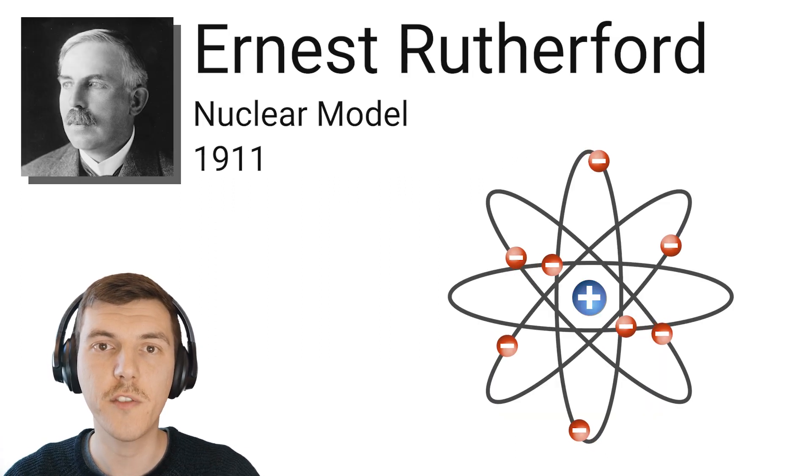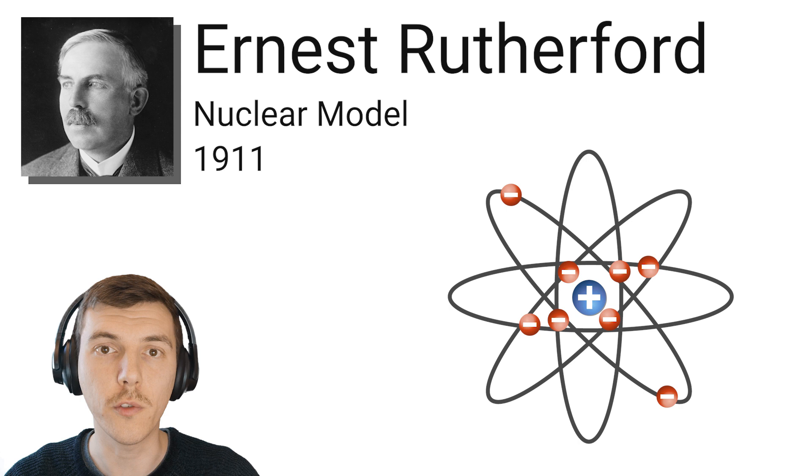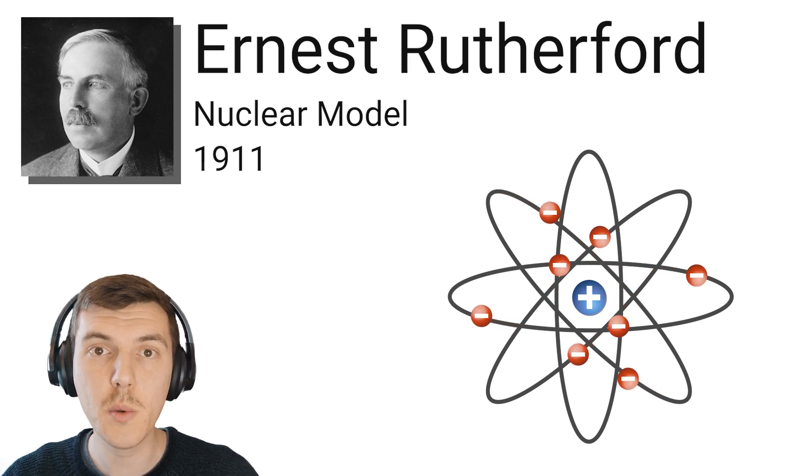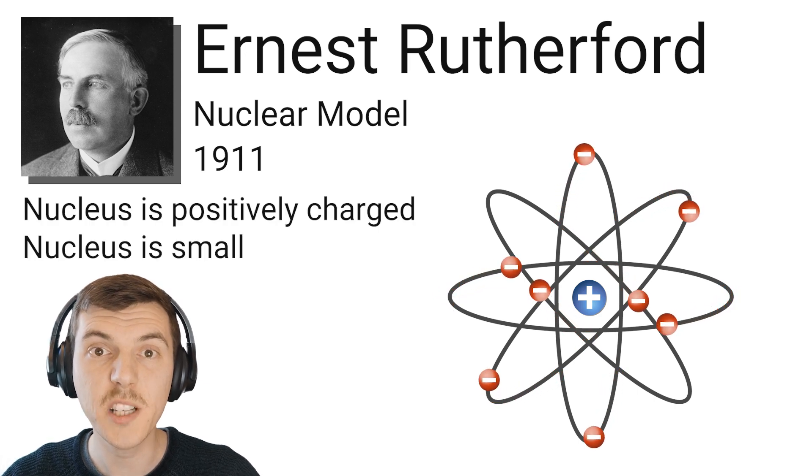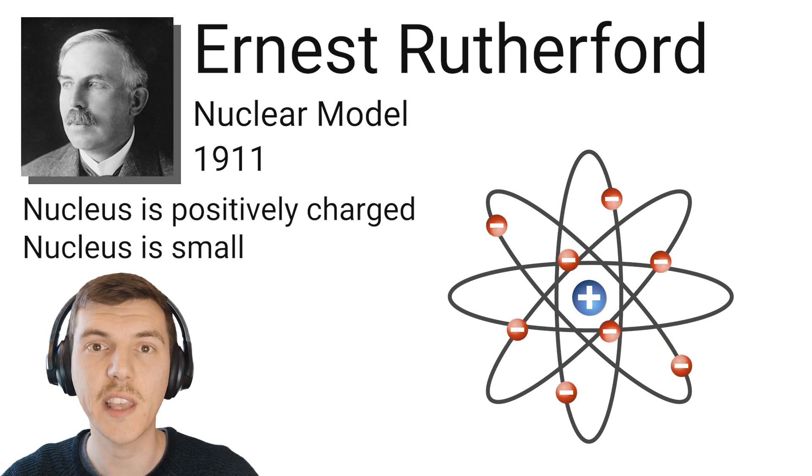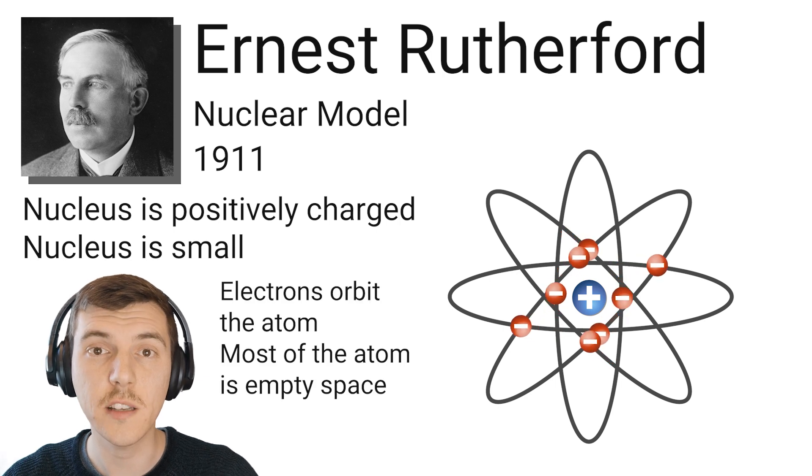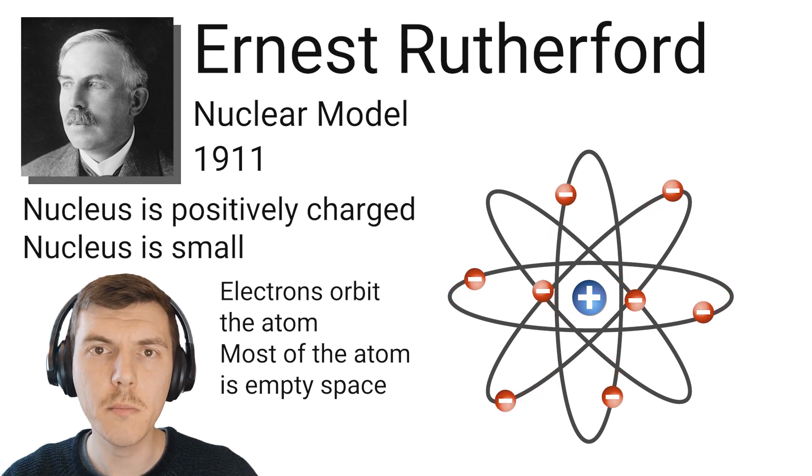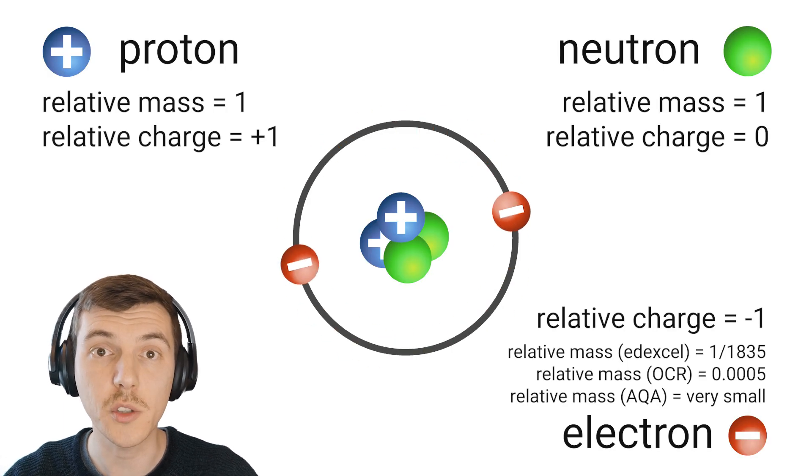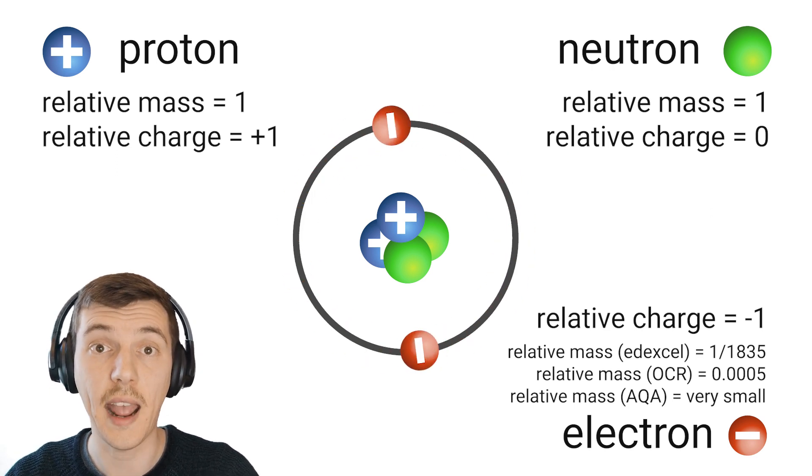A few years later, Ernest Rutherford put the plum pudding model to the test. He fired alpha particles at a thin sheet of gold foil that was only one atom thick. He was able to come up with two conclusions from this experiment. First of all, the positive charge must be very small, and he said that that was in the centre of the atom and called it the nucleus. The second thing he said was that the electrons, the negative charges, must be orbiting around the outside of the atom, so far away from the nucleus, making most of the atom empty space. Later experiments found that the electrons orbit in specific shells around the outside of an atom, and that the nucleus can be split up into two different particles: the proton and the neutron.